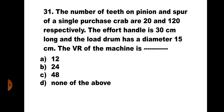Question number 31: The number of teeth on pinion and spur of a single purchase crab are 20 and 120 respectively. The effort handle is 30 cm long and the load drum has a diameter of 15 cm. The VR is: A) 12, B) 24, C) 48, D) none of the above. Formula: VR = (N2 × 2L) / (N1 × d) = (120 × 2 × 30) / (20 × 15) = 7200/300 = 24. The correct answer is B) 24.